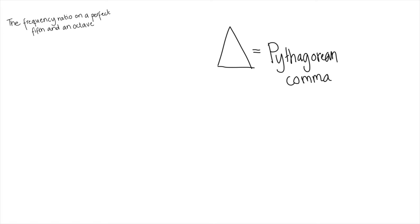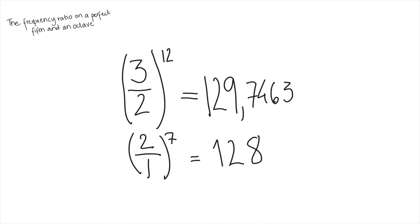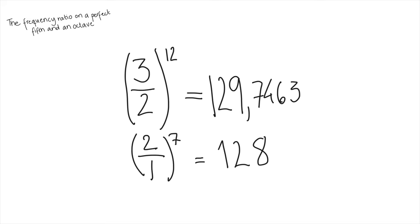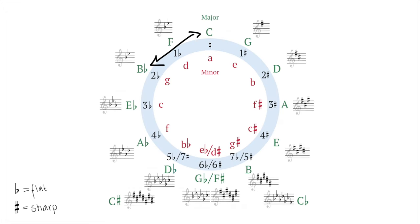So as you see in this calculation, 7 octaves is not the same as 12 fifths. And Pythagoras comma could even be defined as a small difference between two enharmonically equivalent notes like C and B sharp or D flat and C sharp.